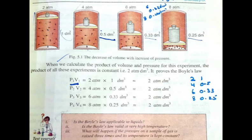If you see, the pressure times volume is constant, 2 atm dm³. This experiment showed us that the product is constant, and this is what we studied in the definition, that the product of pressure and volume of a fixed mass of gas is constant at constant temperature.